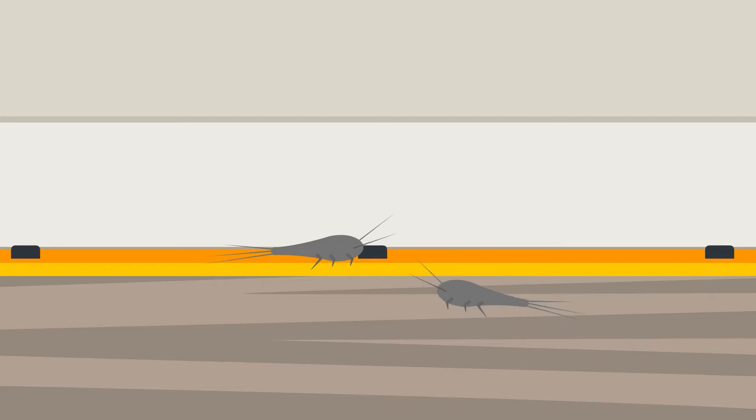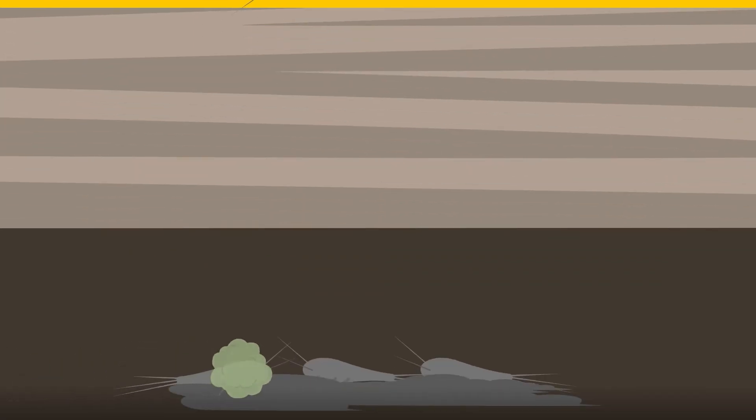When the long-tailed silverfish ingest the poison, they either die on the spot or crawl back to their nests. Here they will act as poisoned food for their fellow kind.